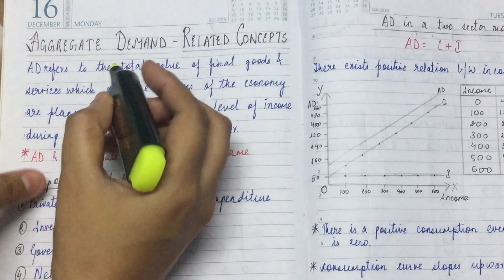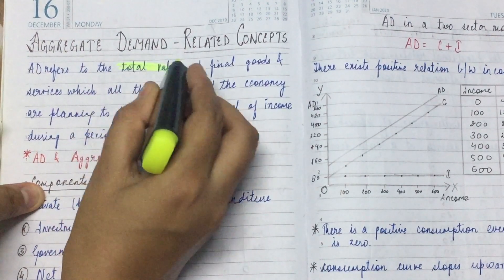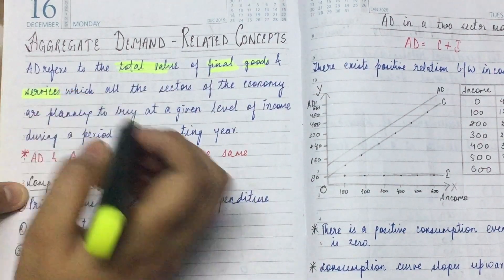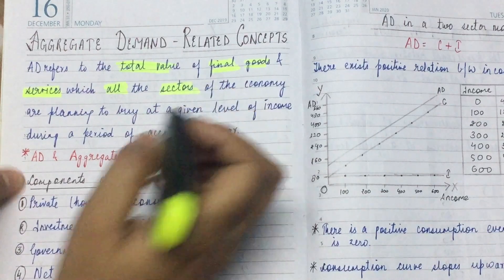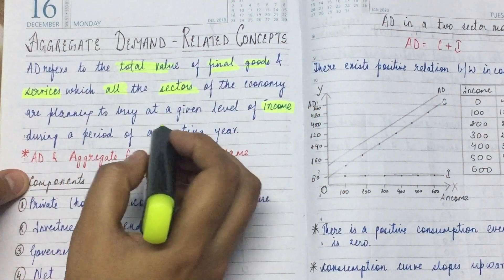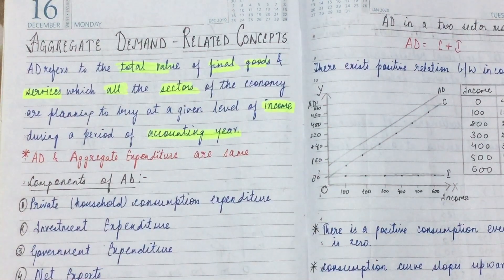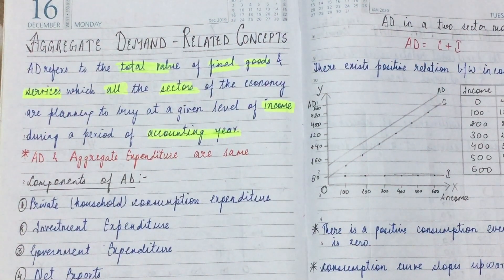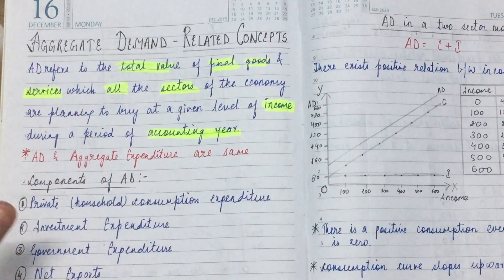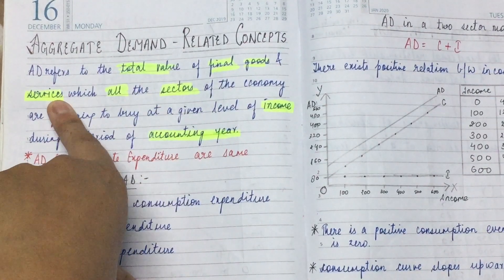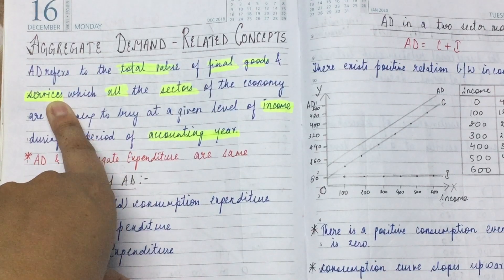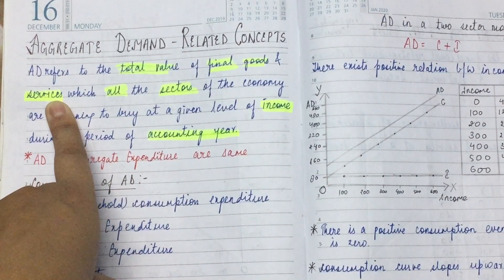Let's highlight the important points: total value, final goods and services, which all sectors are planning to buy at a given level of income during a current accounting year. Aggregate demand means total demand from all sectors. The total value of final goods and services is what we studied in our national income chapter as NNPFC.